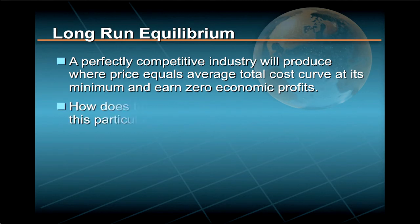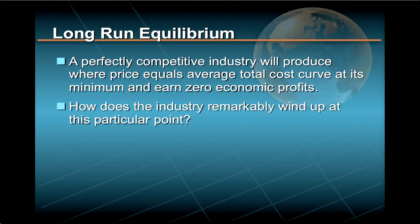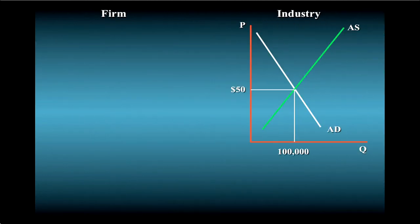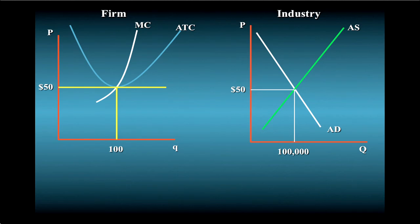The question is, how does the industry remarkably wind up at this particular point? The answer lies in one of our original assumptions: free entry and exit into the market. Let's work this out together with the total market for widgets and the individual firm in short-run equilibrium. Note that the equilibrium market price is $50, equilibrium quantity in the industry is 100,000 units, and economic profits are zero.